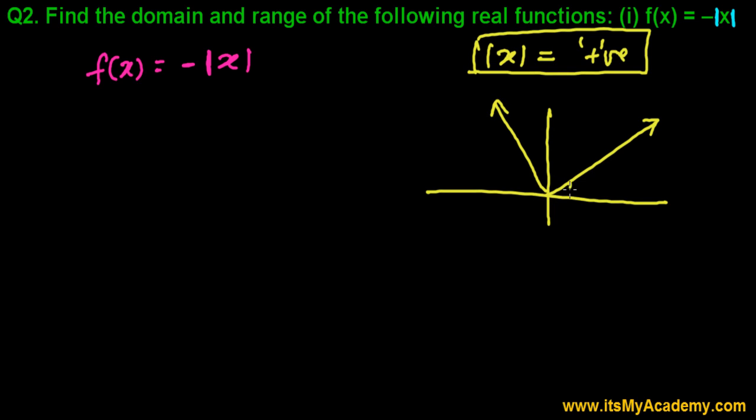Just it will give you always a positive number and the graph of this will be like this. Whatever you put, either positive x you're putting, you'll get y as a positive. If you're putting negative x, you'll get positive. At any cost, you're going to get this quantity as a positive.